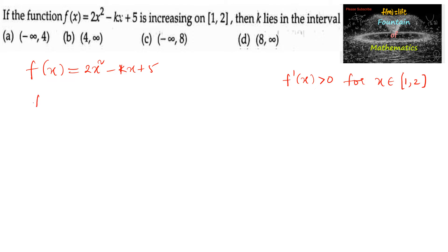Let us find the differentiation. f'(x) = 4x - k + 0. And here f'(x) > 0, that is 4x - k > 0 for x ∈ [1, 2].